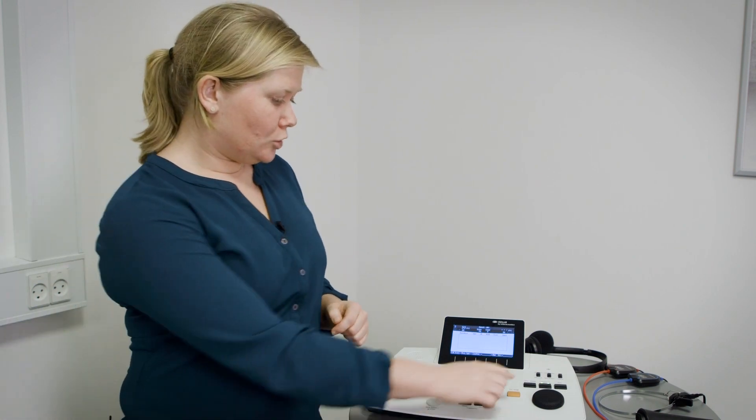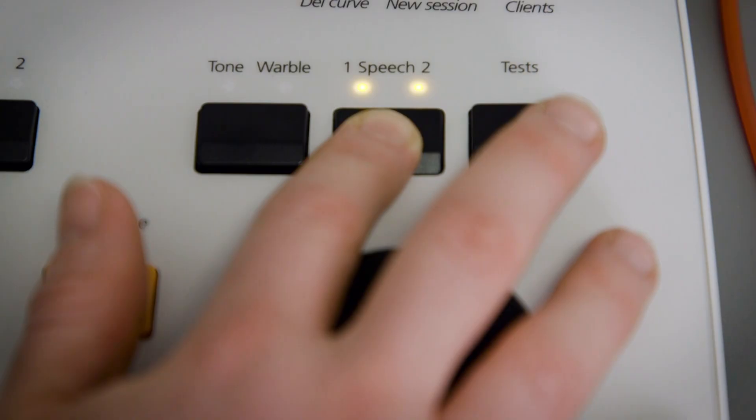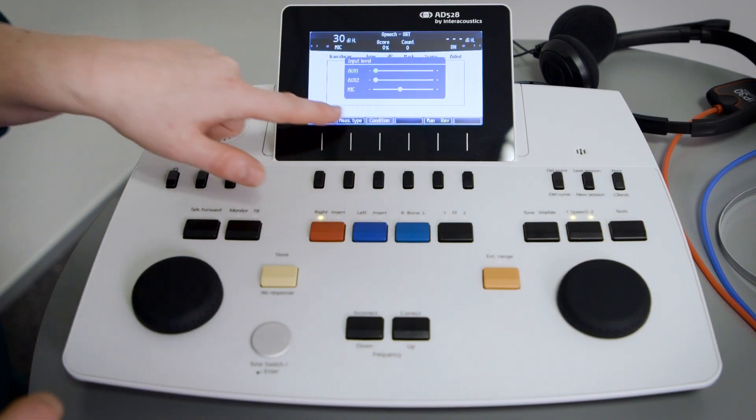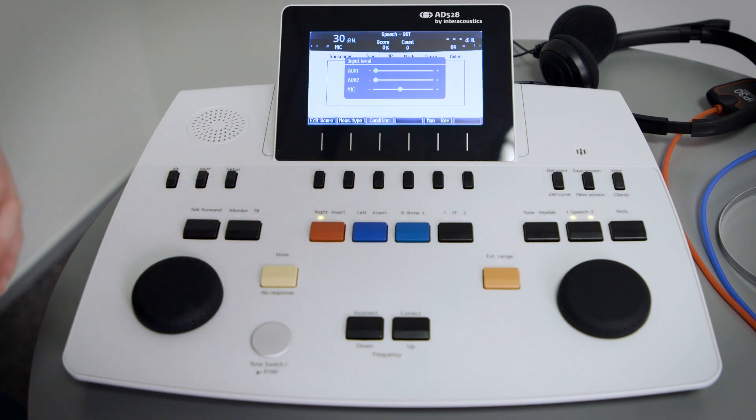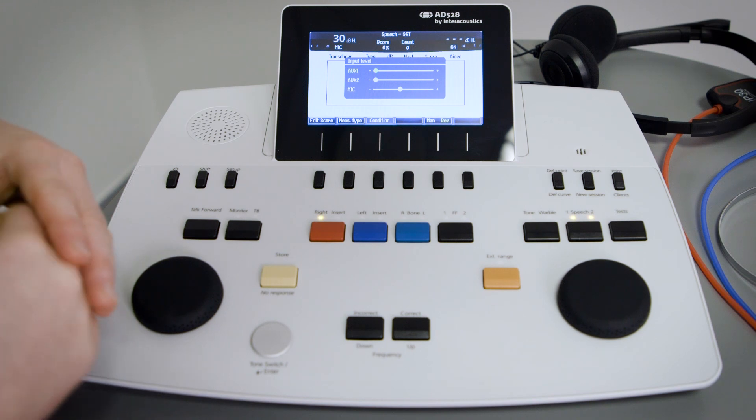That is done by long pressing again here on speech while you are in the mic or the AUX, together with the shift key, and you then have an overview of the channels and calibrate in accordance with the level so that you have an accurate level of the output that you send to the patient. That is something you need to do the first time you set up the device with the mic and the monitor headset that you use.